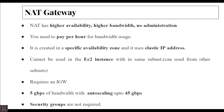A NAT gateway is a network address translation service. You can use a NAT gateway so that instances in your private subnet can connect to services outside your VPC, but external services outside your VPC cannot initiate any connection with your private instances.